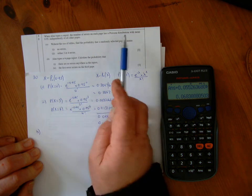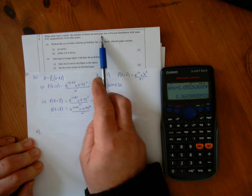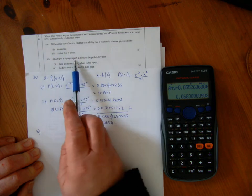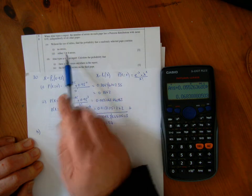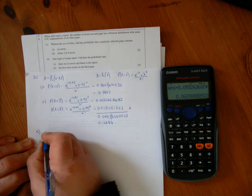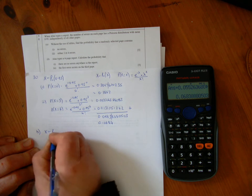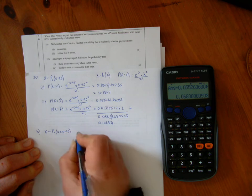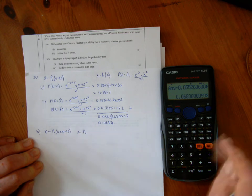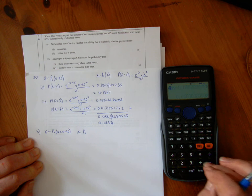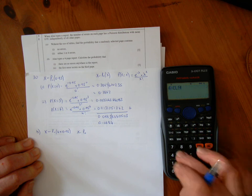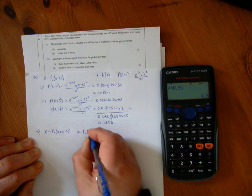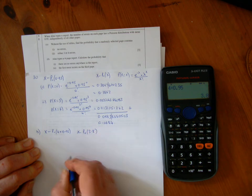The mean for each page is 0.95, so if I've got a 4 page report, the mean is going to be 4 times 0.95, which equals 3.8. So this is a Poisson of 3.8.